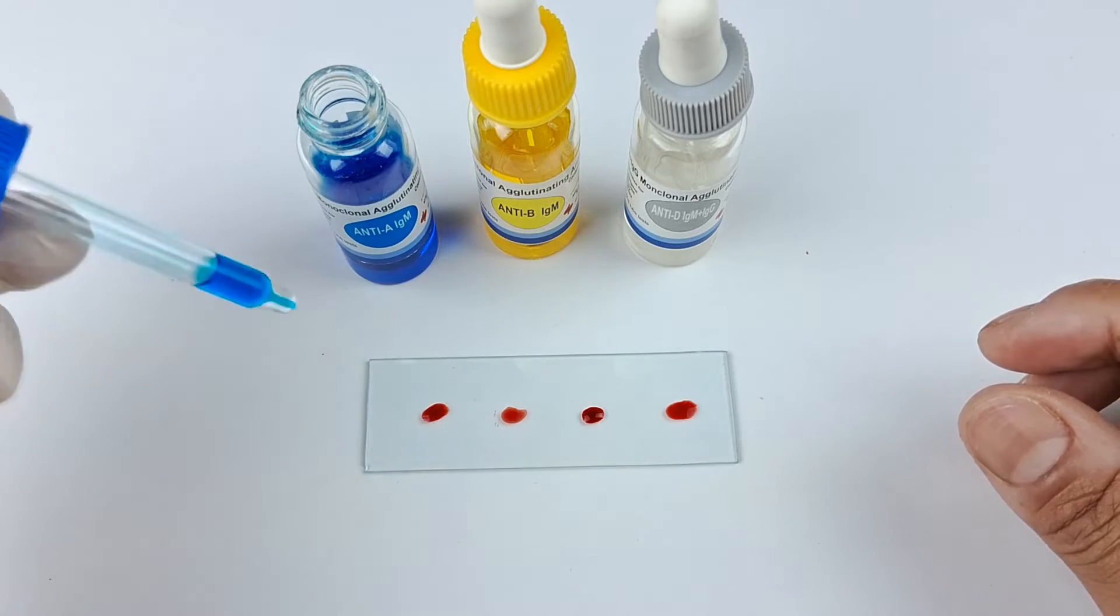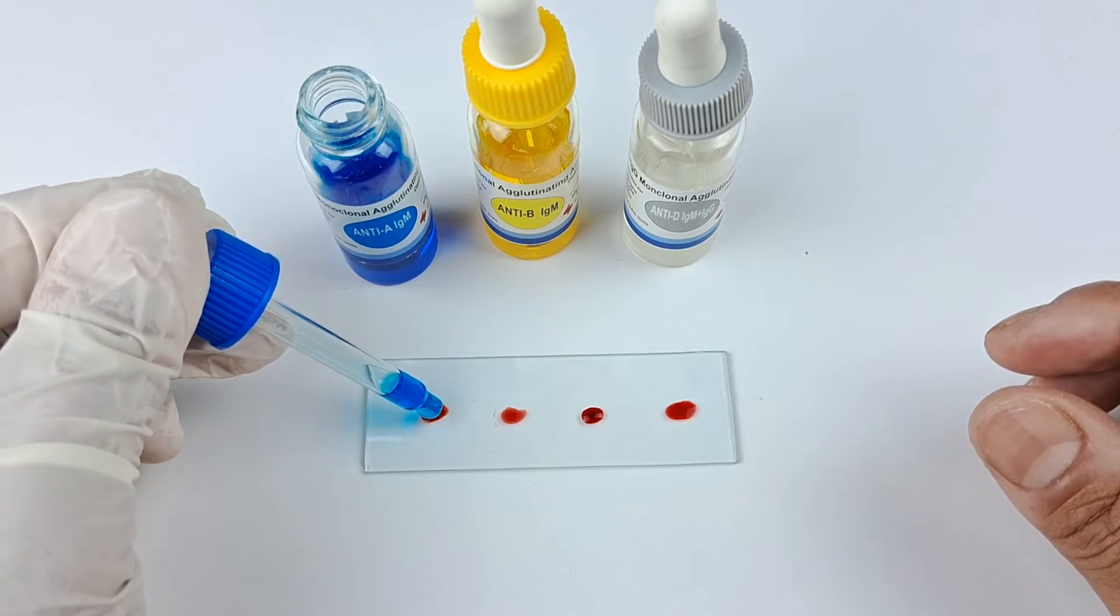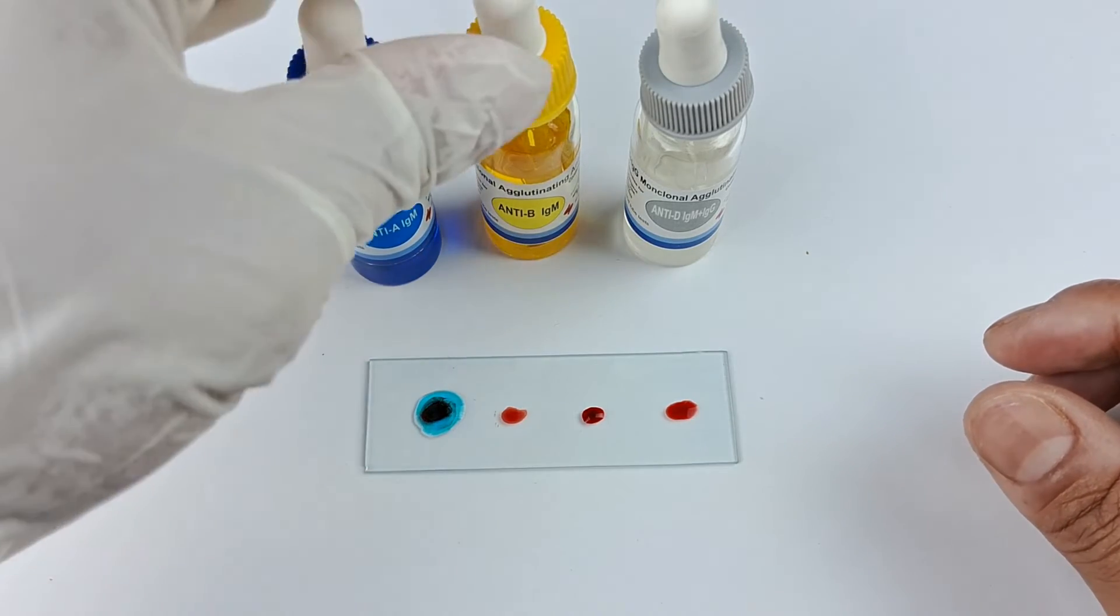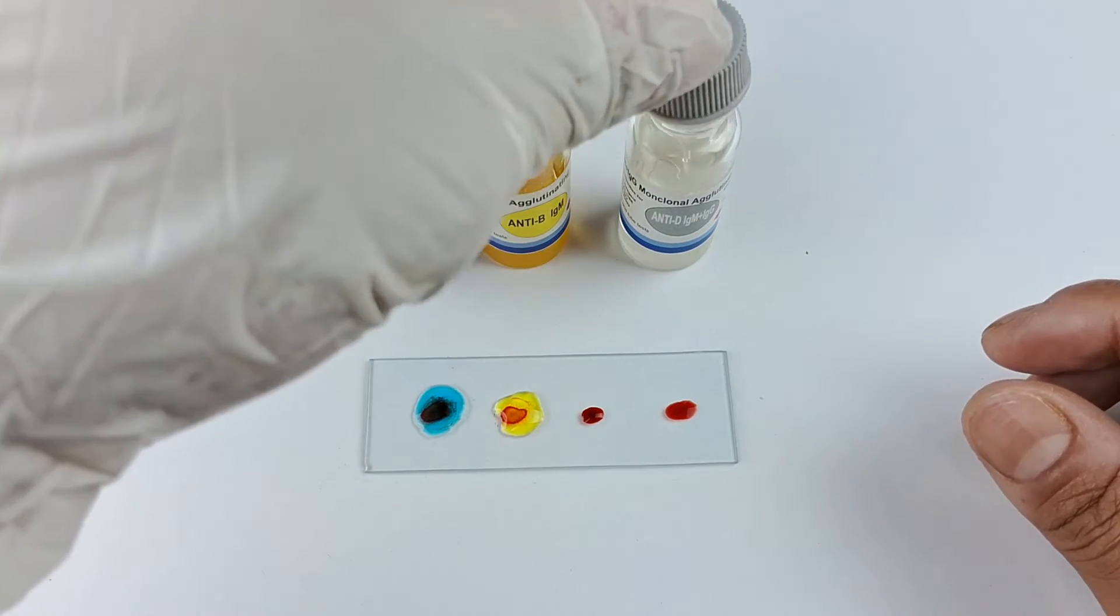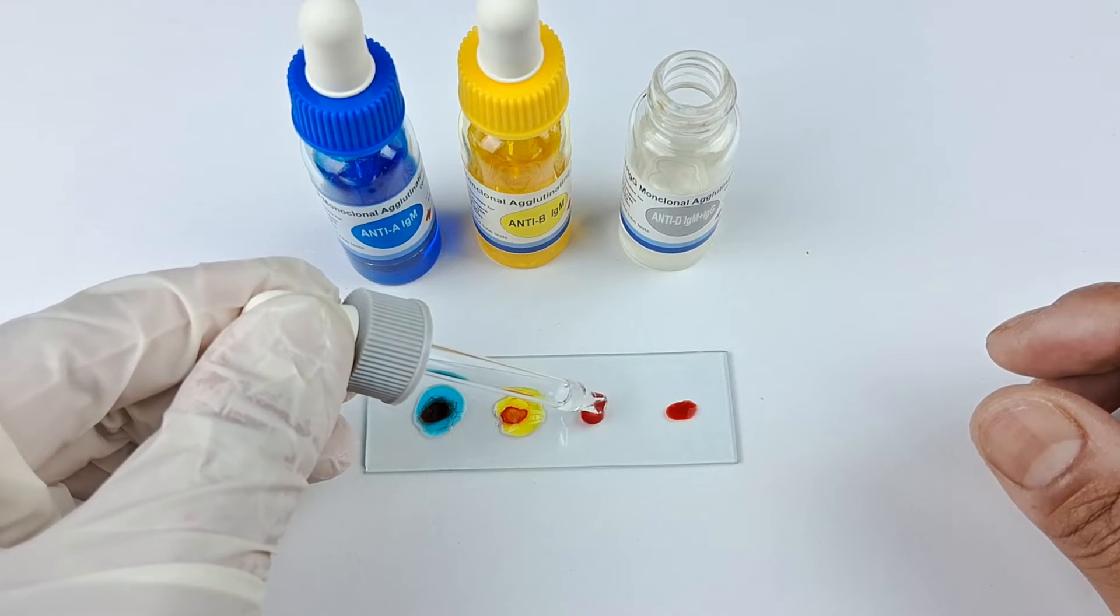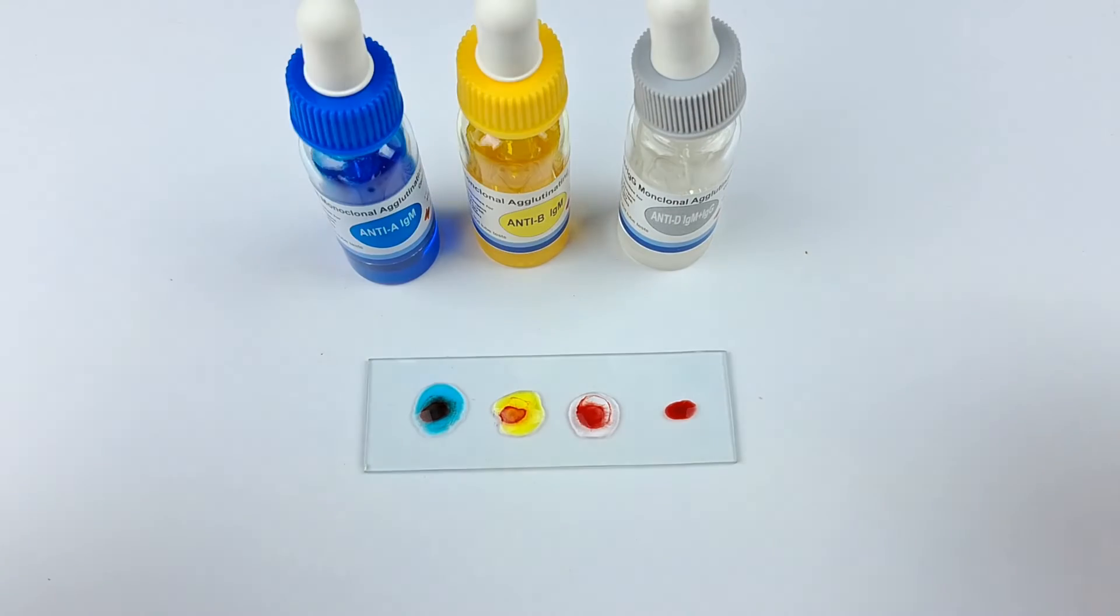Then open the vials and place one drop each of the antisera A, antisera B, and antisera D reagents in quick succession to the first, second and third drops of blood respectively. To the fourth blood drop, which is the negative control, add nothing else but a drop of normal saline.